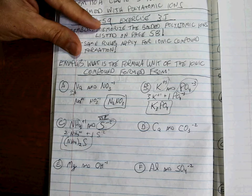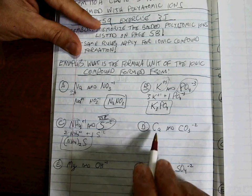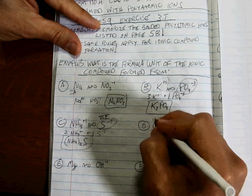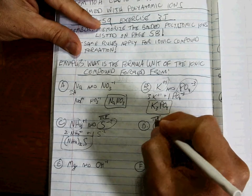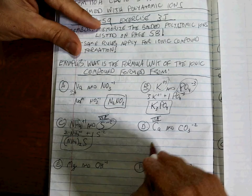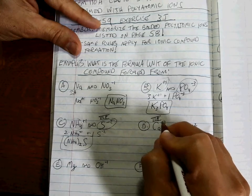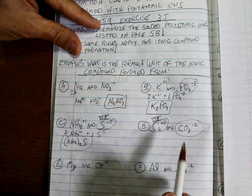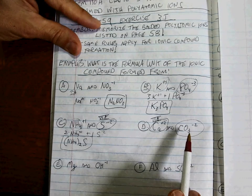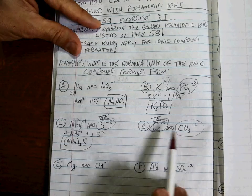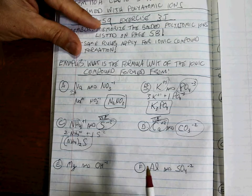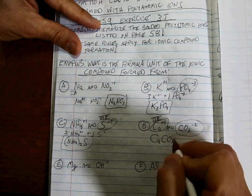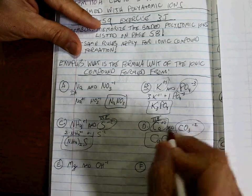Next, calcium is Group 2A — two electrons in its outer shell — so it makes a Ca(2+). That's the cation. Combined with carbonate (CO3 2-) as the anion, it's a one-to-one ratio to get the charge to even out. The formula is CaCO3, calcium carbonate.